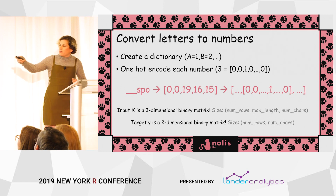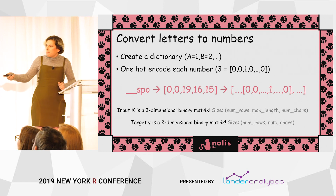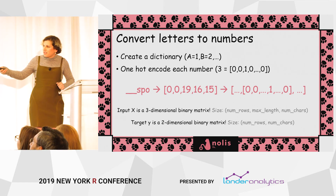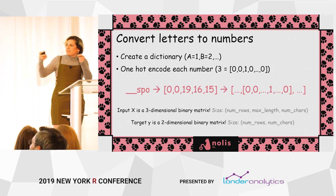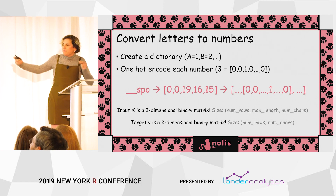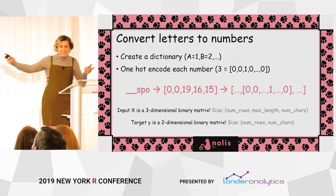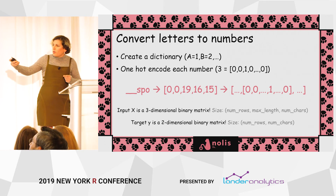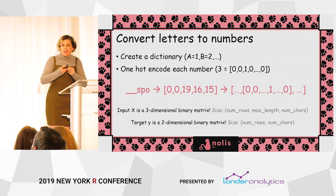Doing those steps together, blank-blank-S-P-O becomes a sequence of numbers which becomes a sequence of sequences of zeros and ones. The input ends up as a three-dimensional binary matrix: number of training rows by the maximum length of the name by the number of characters in the dictionary — 26 or 27 if you include a space. The target Y is a two-dimensional matrix: number of training rows by the number of possible next characters.